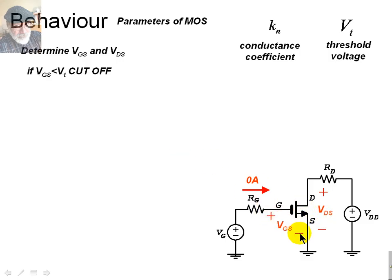If this voltage here, VGS, is less than the threshold voltage, there will be no current in the channel. We say the transistor is in cut off, and that means that the current in the drain is zero, this current here.